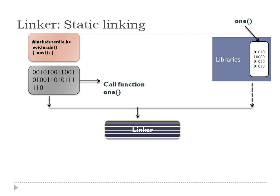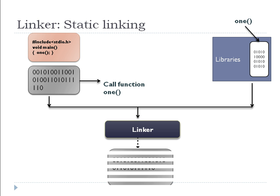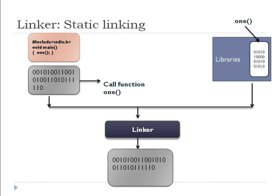We have generated object code, and as the fourth step, what the linker will do is take this object code and generate an executable file. In that executable file, it will include the code of function 1. So in case we have called 5 functions, at the end the object code of those 5 functions will be included by the linker in the executable file. This is static linking — the code will be included in the executable itself.